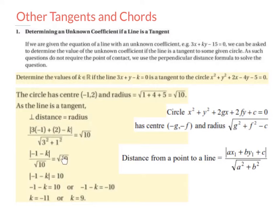Now, what I would do here is change root 10 to root 10 over 1. And then I would cross multiply and solve for k. The modulus of minus 1 minus k times 1 is just the modulus of minus 1 minus k. And root 10 multiplied by root 10 is 10. So what I did here was I cross multiplied.